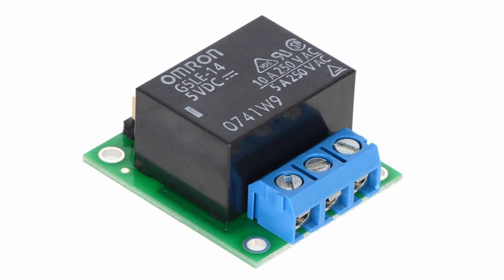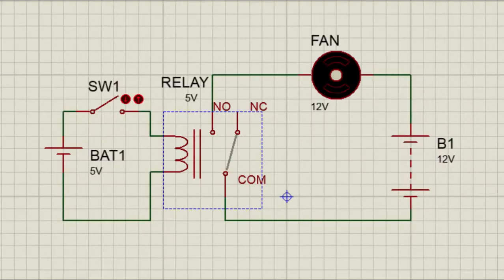Relays come in different types and shapes. These figures here show a typical electromagnetic relay, but it can come in different types and shapes as well. This is the electrical symbol of a relay.